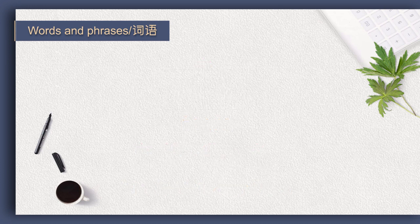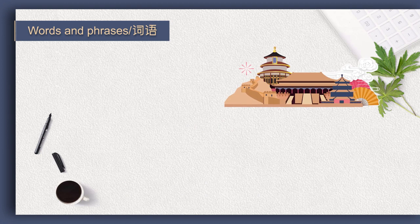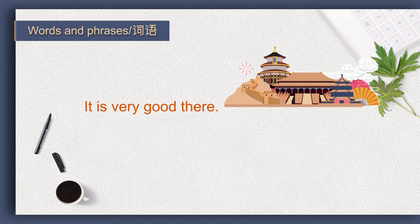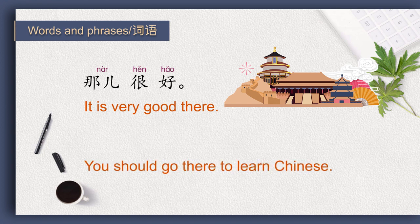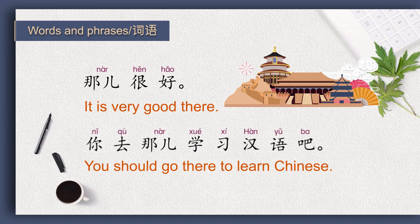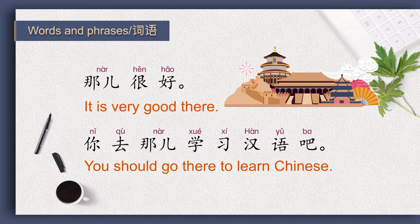银行在那儿。 One of your friends wants to study Chinese. You have been to Beijing, so he asks you how Beijing is. You say it is very good there: 那儿很好。 You should go there to learn Chinese: 你去那儿学习汉语吧。 很好。